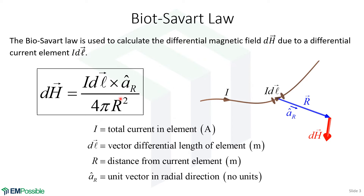R is simply the magnitude of the vector R — the distance from the differential current element out to where we're observing the field. Since this equation calculates a differential magnetic field, it makes sense that we would have to integrate it to get the total magnetic field. We would have to integrate along the total length of the wire to get the total magnetic field. A differential current element only produces a differential magnetic field.